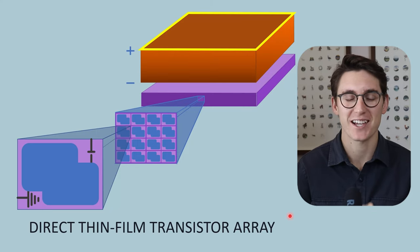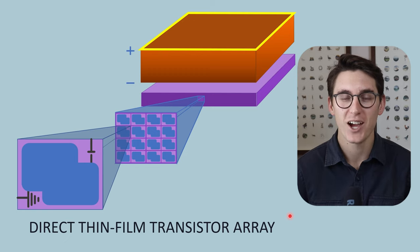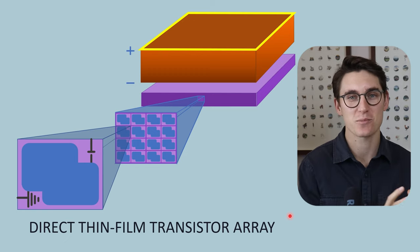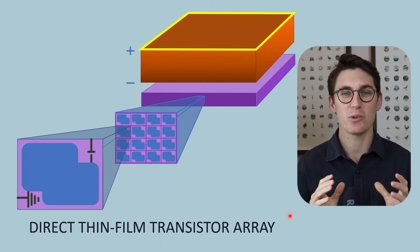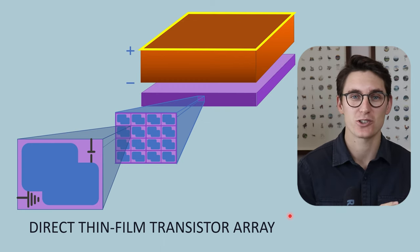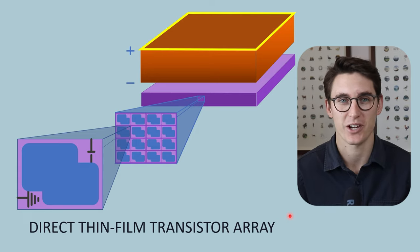So let's move on to the last of our x-ray detectors, our direct thin film transistor arrays. We've looked at our cassette-based systems, our screen film radiography, our computed radiography, and we've looked at our indirect digital radiography, our CCD chip as well as our indirect thin film transistor array.